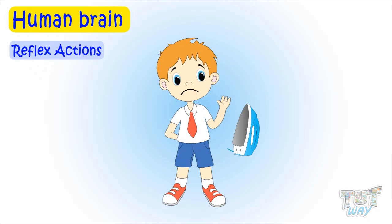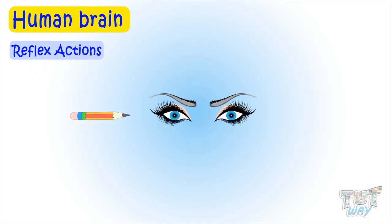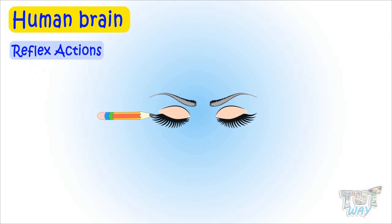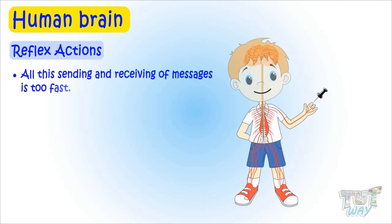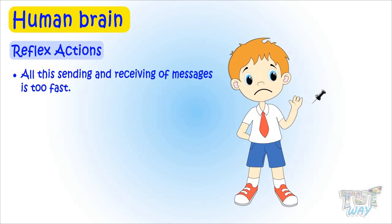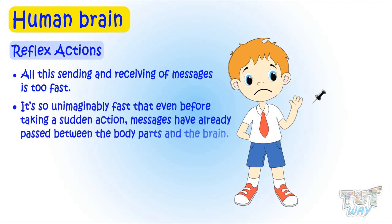These quick responses are called reflex actions. For instance, if something comes too close to our eyes, our eyes immediately shut — that too is a reflex action. All this sending and receiving of messages is incredibly fast; even before we take a sudden action, messages have already passed between the body parts and the brain.